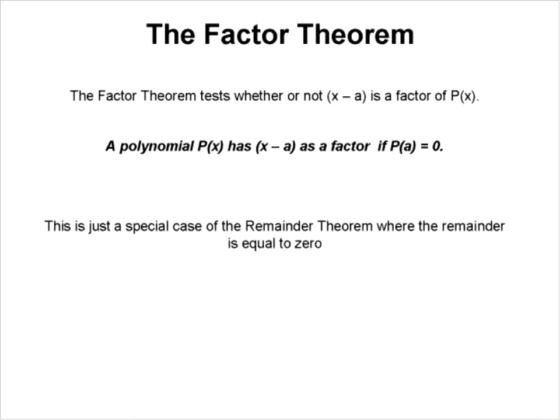The factor theorem is really just a test to determine whether or not X minus A is a factor of P(x). So if we have a polynomial and we're trying to determine the factor, what that means is if X minus A is a factor of the polynomial, then P(A) is equal to zero.